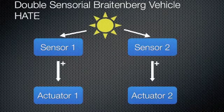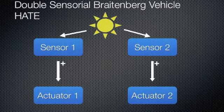Finally, the last vehicle: the hate vehicle. Here sensor 1 controls actuator 1 and sensor 2 controls actuator 2. The difference to the love vehicle is the direct proportional sensor-actuator relation.